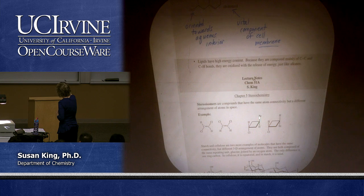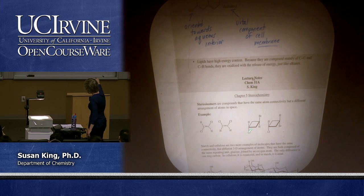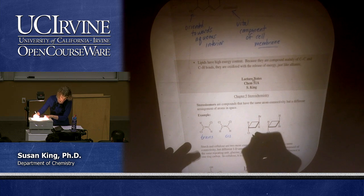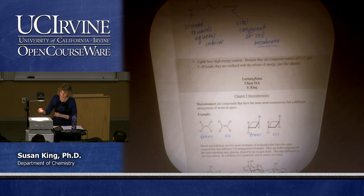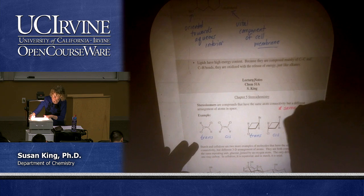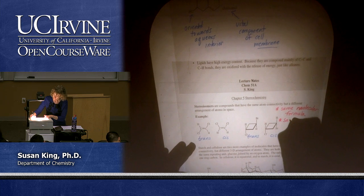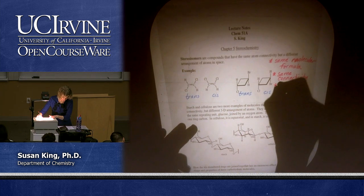Likewise, when we have a ring, if bromine is on the top side and chlorine is down, we call that trans. If bromine and chlorine are on the same side of the ring, that's cis. So those are stereoisomers of each other — same molecular formula, same connectivity, meaning all atoms are bonded in the same way to the same atoms, but a different arrangement of atoms in space.